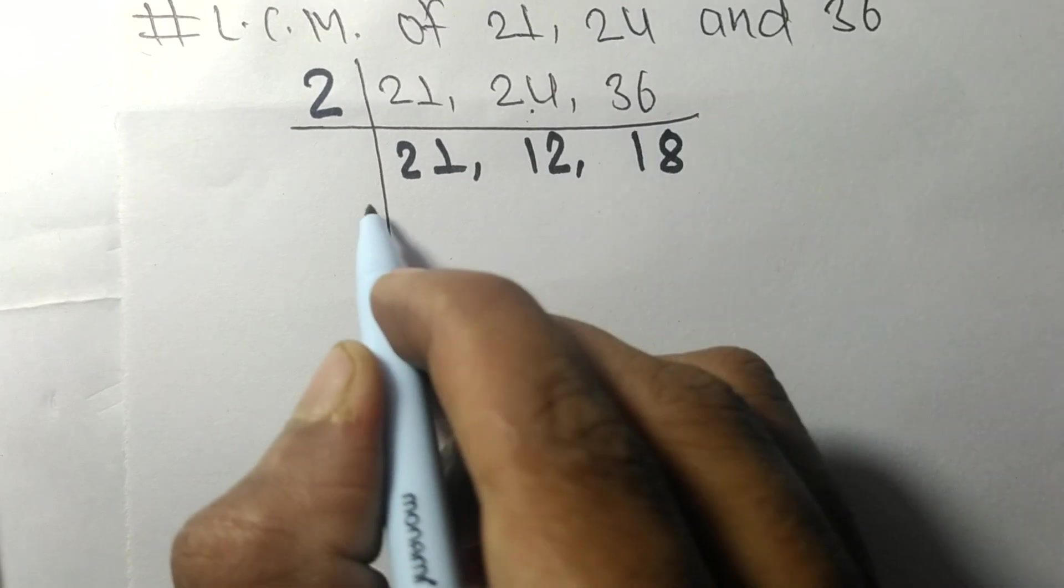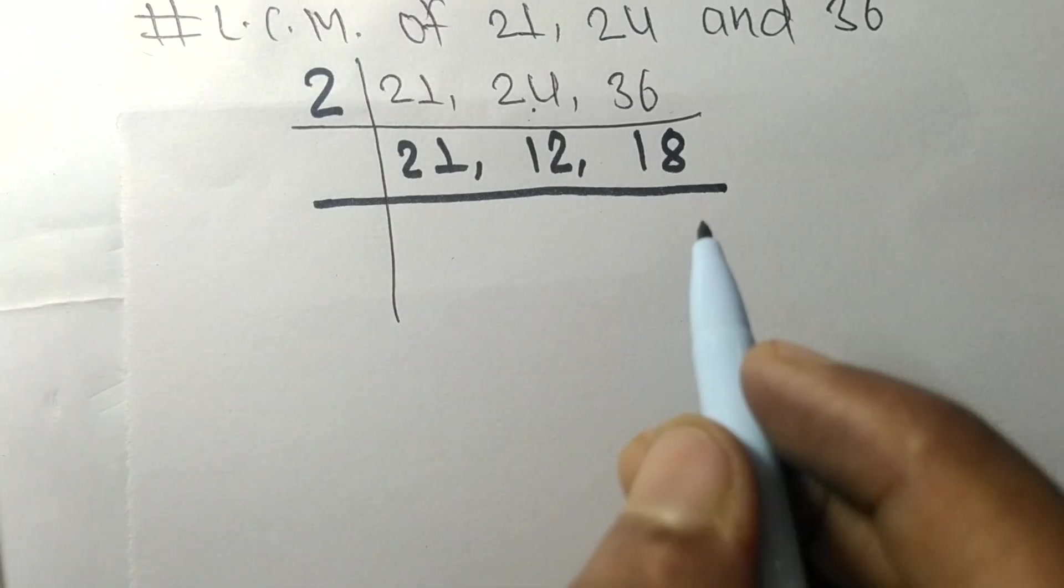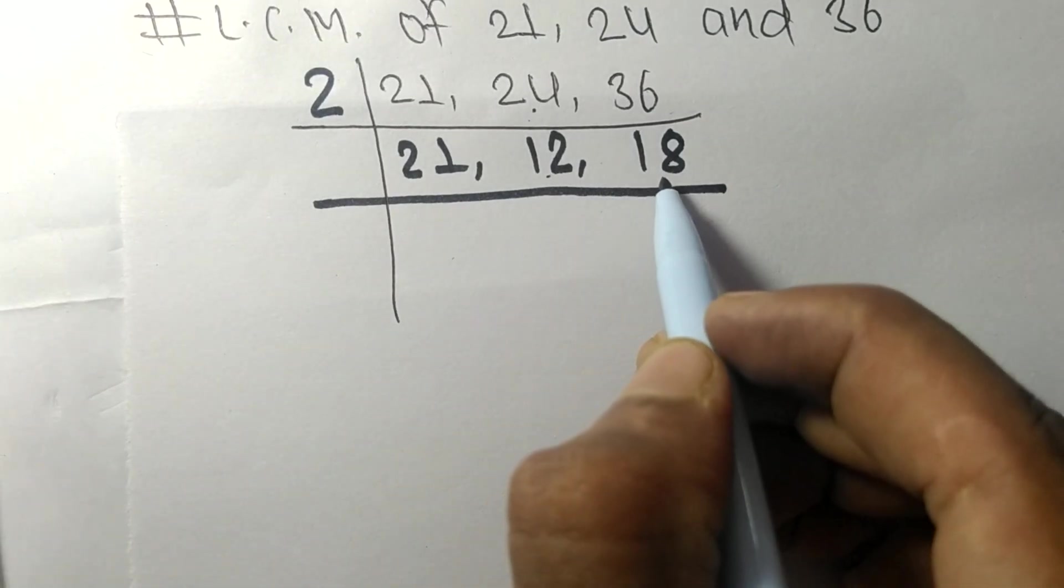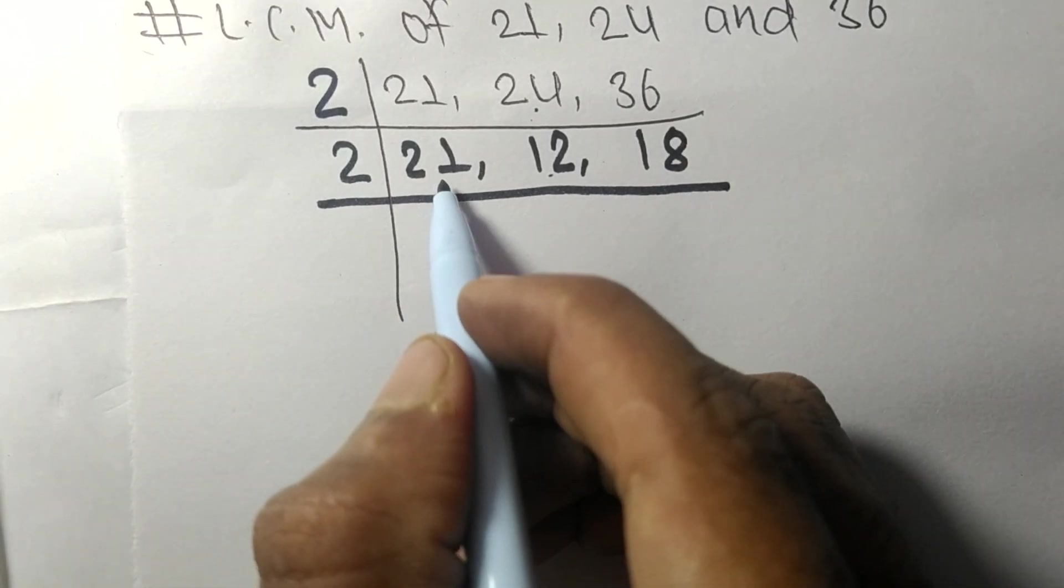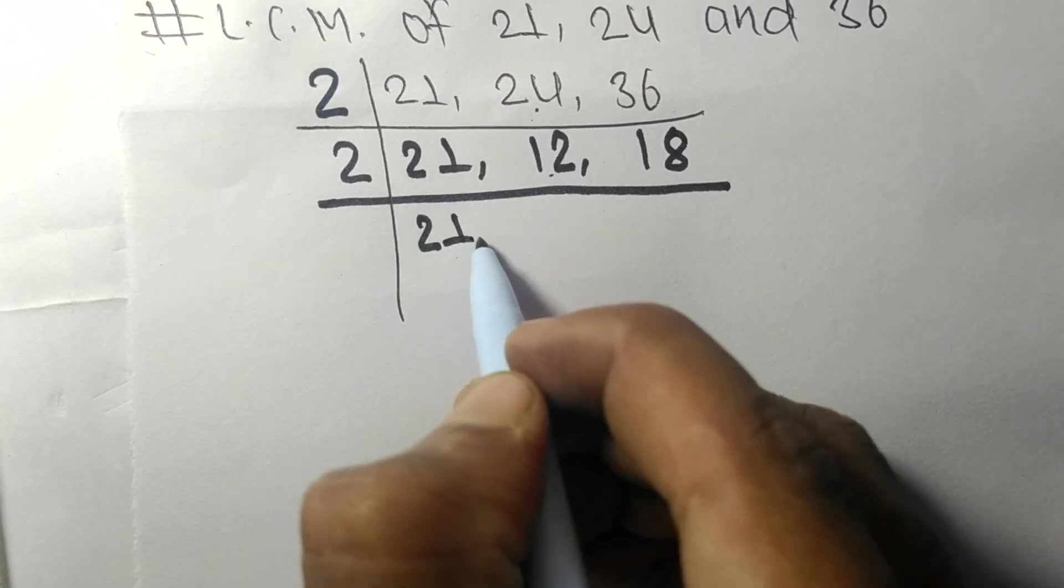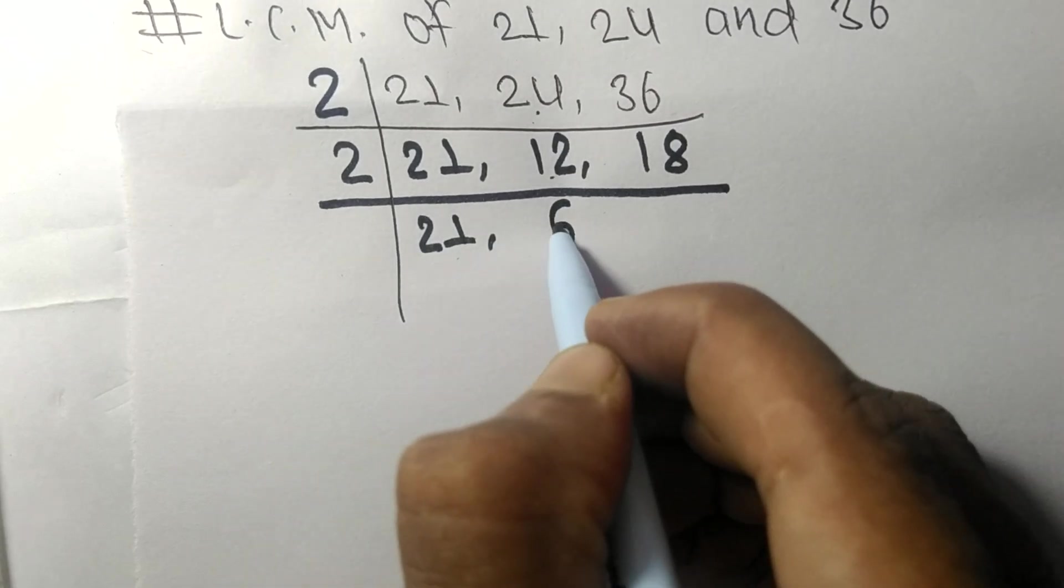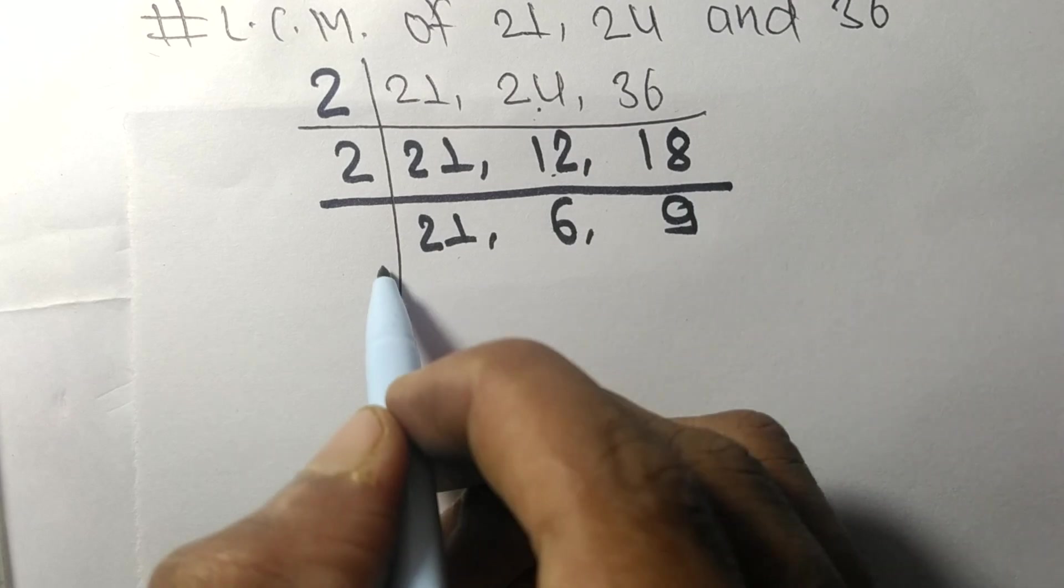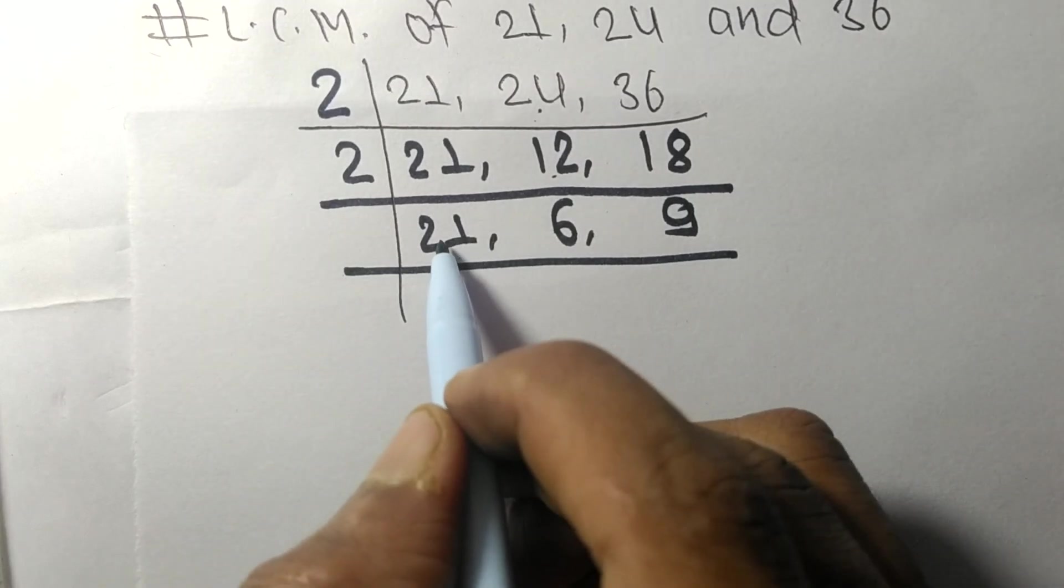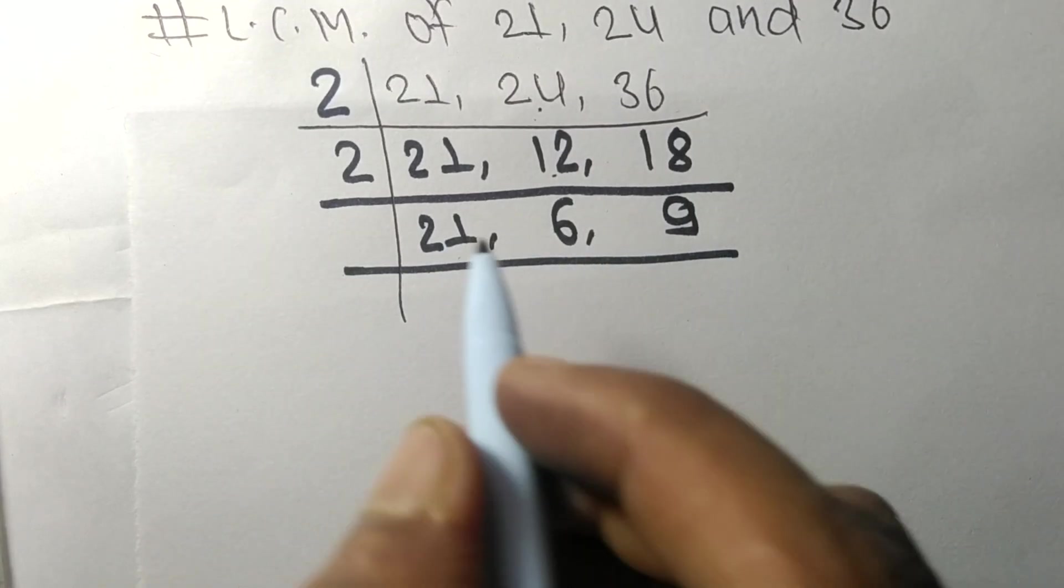So now again, 12 and 18 are divisible by 2, 21 is not divisible so it is the same. 2 times 6 equals 12, 2 times 9 equals 18. So now these all numbers are divisible by 3.